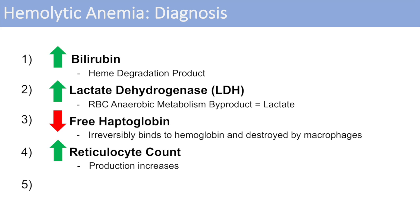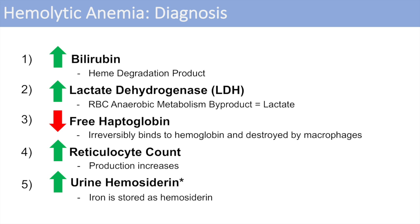The last marker, not typically measured, is urine hemosiderin. Hemosiderin is the storage form of iron released from the heme moiety. This marker is not typically looked at — we can usually figure things out from the other four markers — but it's available in case there are issues with other markers, by looking at the urinary output of hemosiderin.